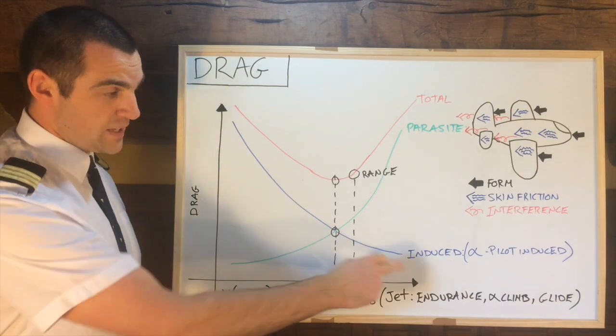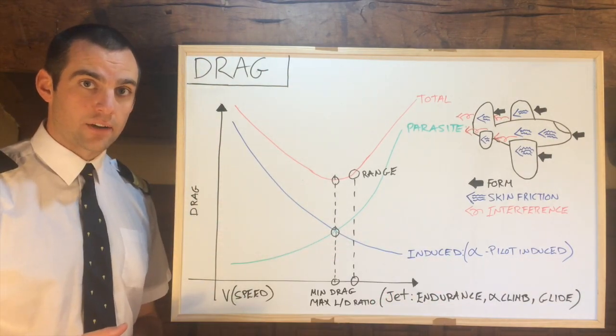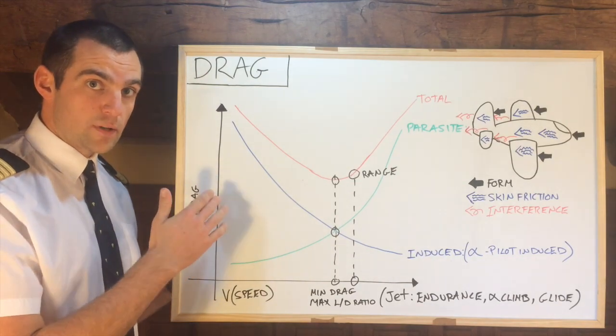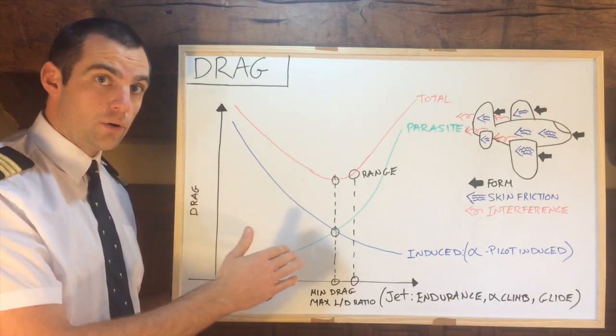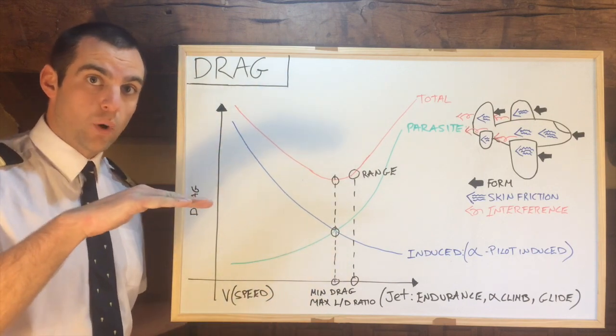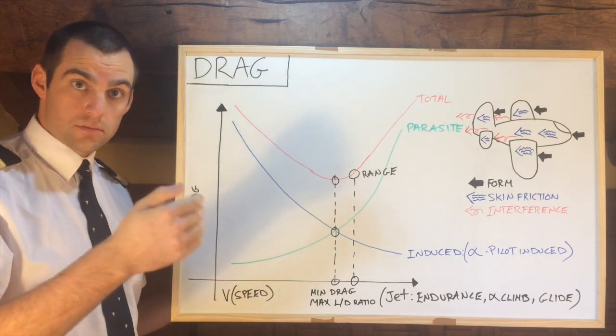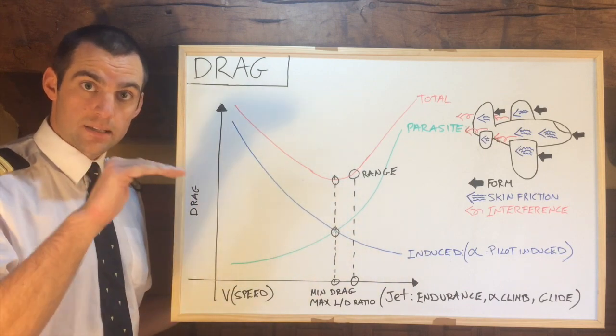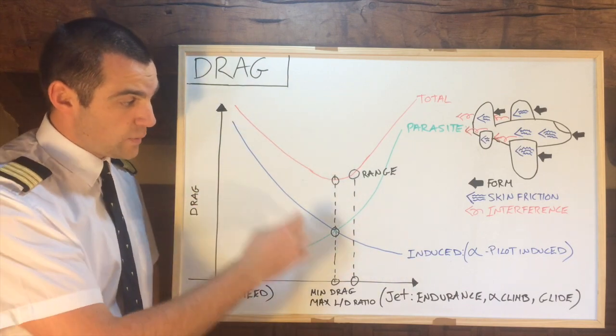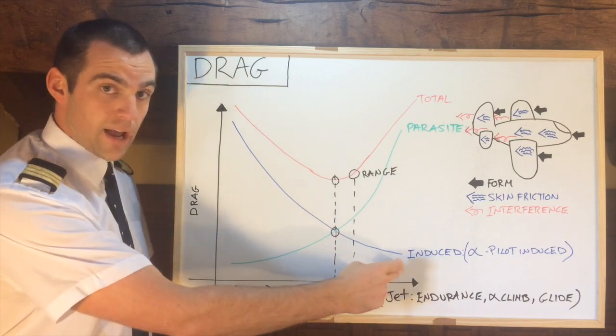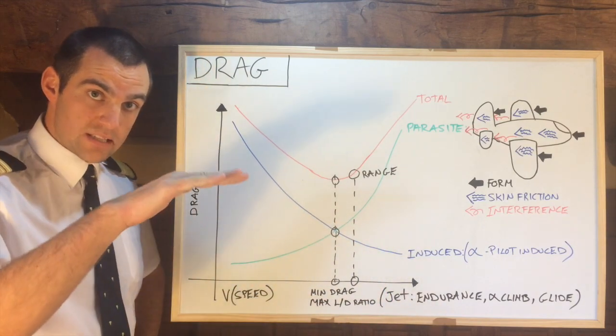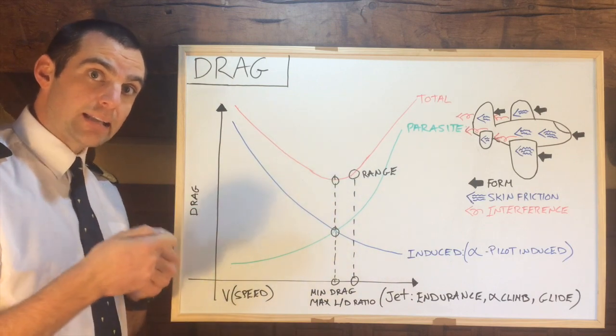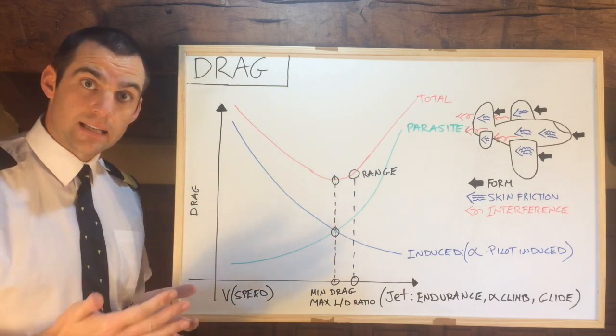First of all, induced drag is dependent on the angle of attack of the aircraft. It's essentially pilot induced. Now if you can visualize the aircraft, the faster we go the less angle of attack we require because we need less lift, because speed will replace lift in our formula to maintain us in the air. So the faster we go, the lower that induced drag will be because we're pitching down. If we slow down the aircraft, we need to pitch up slightly to maintain that altitude so we don't drop, to maintain our lift.